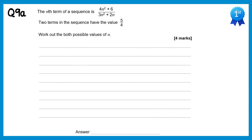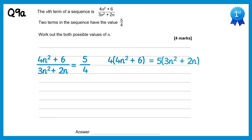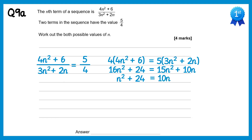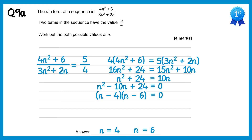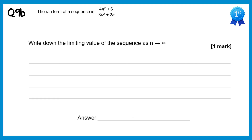In this question we're told 2 terms have the value 5 over 4, so we set the nth term equal to 5 over 4. Cross multiplying gives 4 lots of 4n squared plus 6 equals 5 lots of 3n squared plus 2n. Expanding gives 16n squared plus 24 equals 15n squared plus 10n. Subtracting 15n squared gives n squared plus 24 equals 10n, then subtracting 10n gives n squared minus 10n plus 24 equals 0. Factorising: n minus 4 times n minus 6 equals 0, giving n equals 4 and n equals 6. For the limiting value, ignoring the 6 and plus 2n, we get 4n squared over 3n squared, which gives 4 over 3, or 1.3 recurring.